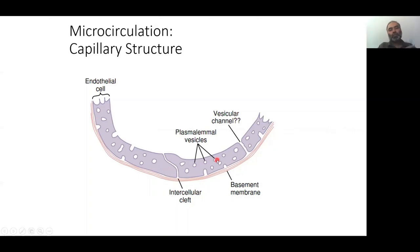In the liver, these endothelial cells have very spacious clefts for movement of material between the blood and the liver.